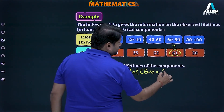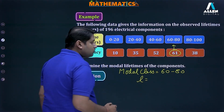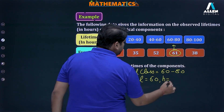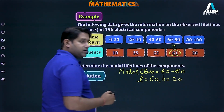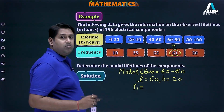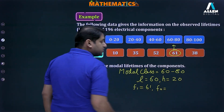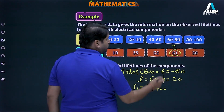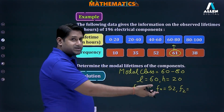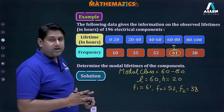The modal class is 60 to 80, so the lower limit l = 60, and the class width h = 20. For f1, f0, and f2: f1 is the frequency of the modal class = 61; f0 is the frequency of the class preceding the modal class = 52; and f2 is the frequency of the class succeeding the modal class = 38.